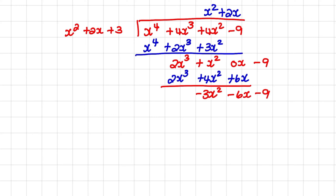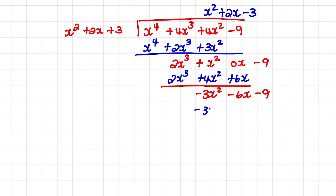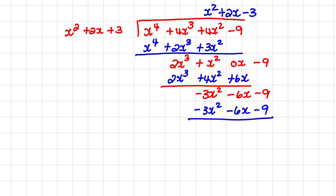Now I repeat that process one more time. I take negative 3x squared and I divide it by x squared, and that answer is negative 3. And I multiply negative 3 with every term in the factor, which gives negative 3x squared minus 6x minus 9. And I subtract this result from our previous result. So negative 3x squared plus 3x squared is 0. Minus 6x plus 6x becomes 0. And minus 9 plus 9 becomes 0.